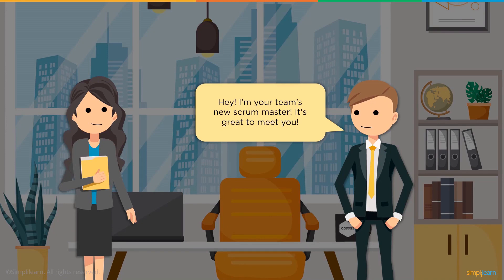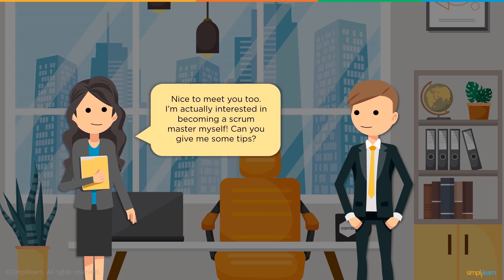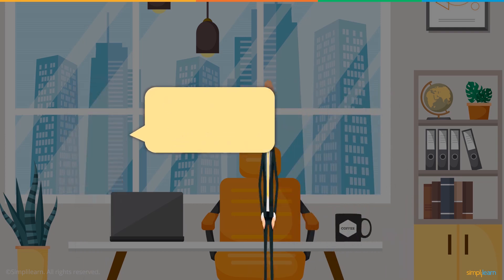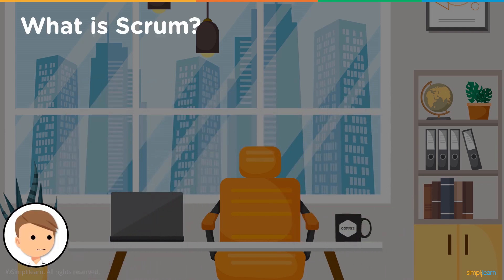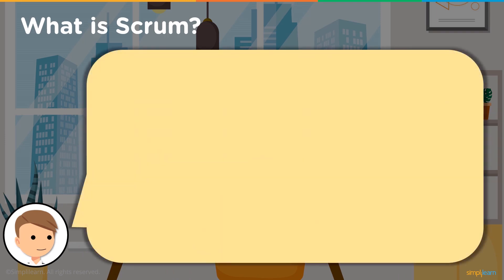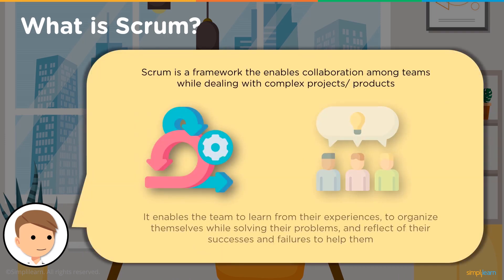We have two people — let's call them Jim and Pam. Jim introduces himself to Pam and the team as their new Scrum Master. Pam expresses interest in becoming a Scrum Master herself and asks for some guidance from Jim. Jim is happy to help and starts explaining. First, let's talk about Scrum — what exactly is it?